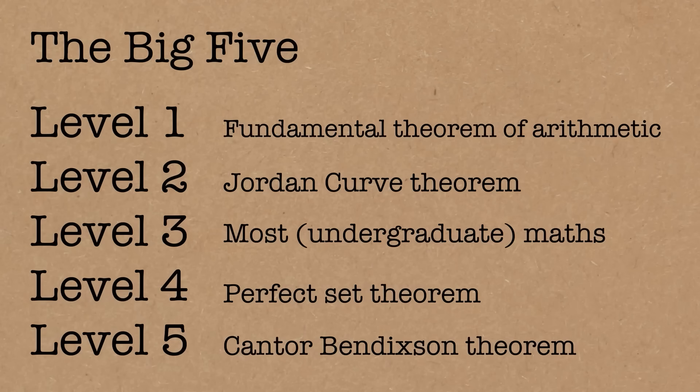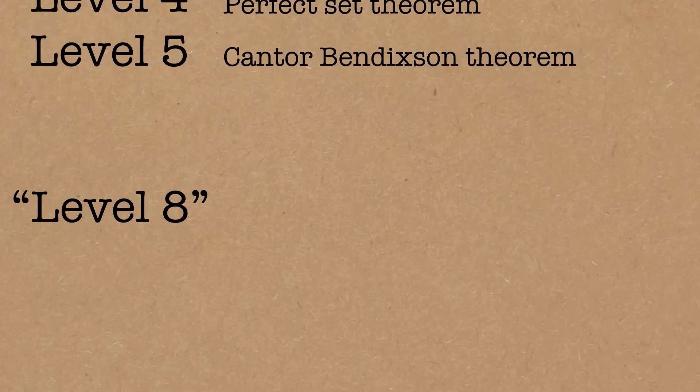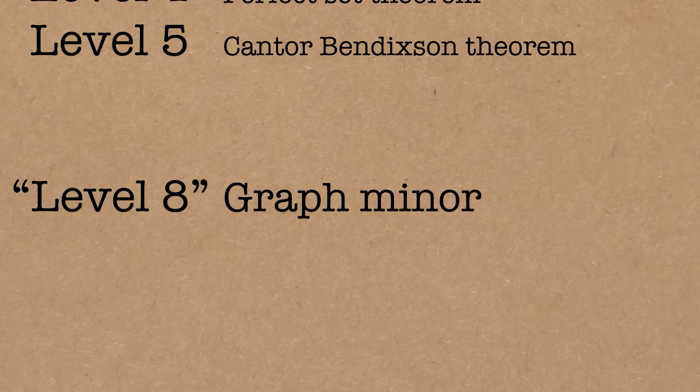It's inadequate. You have to go, I mean, the levels beyond this are not well defined, but you probably have to go down to like level eight or something. So I'll put it in quotes because the first five are standards, but level eight I'm sort of making up. It's got the feel of a level eight. So that's where the graph minor theorem sits.